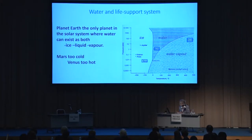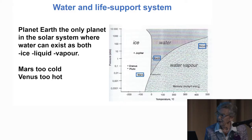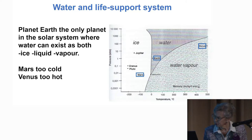Here you have a diagram showing a number of different stars, with temperature on the horizontal axis and pressure on the vertical axis. Mars is too far away from the sun, so water can only exist as ice. Venus is too close to the sun, so water can only exist as water vapor.